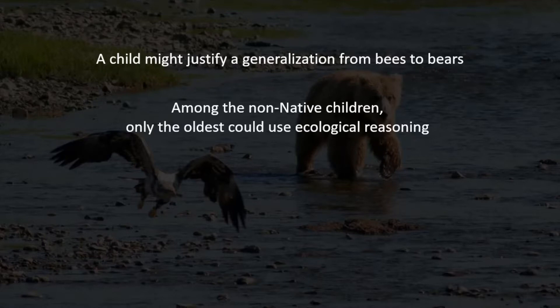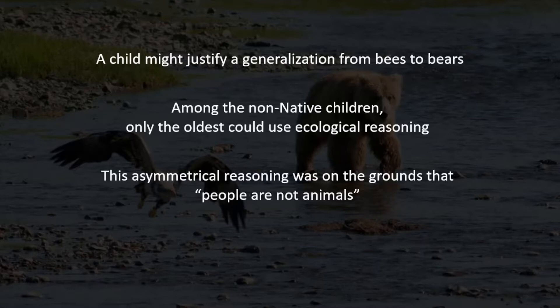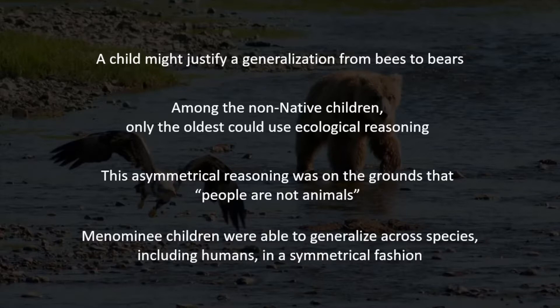Among the non-native children, only the oldest could use ecological reasoning. Many of the non-native children also frequently could not recognize shared traits between animals and humans if they were first introduced as traits in the animals. This asymmetrical reasoning is on the grounds that people are not animals. Menominee children were able to generalize across species, including humans, in a symmetrical fashion. They could see that humans may have some of the same traits as animals to the same degree that animals share human traits.